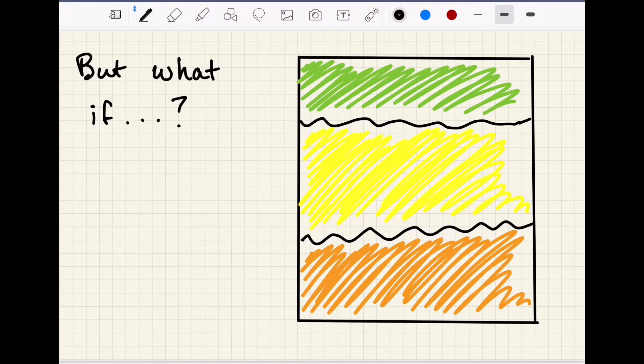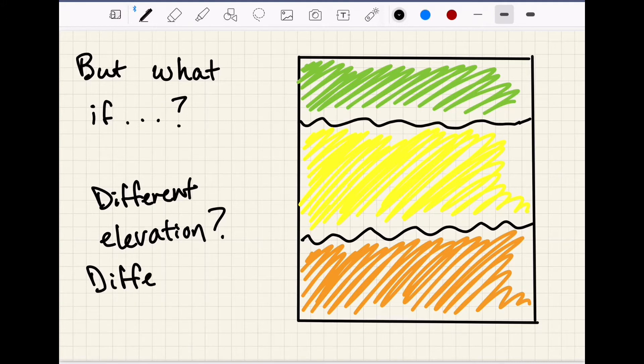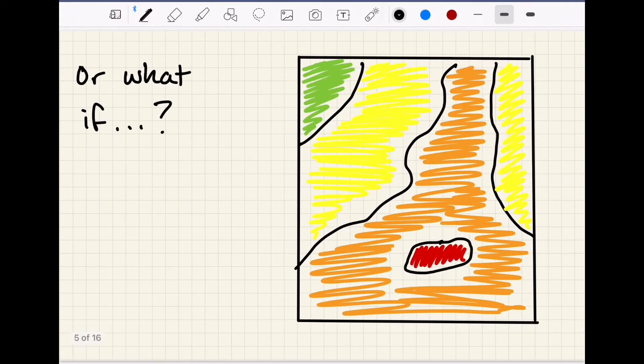But what if your vineyard block looks more like this in terms of changes in elevation or soil type? Or what if it looks like this? Now we're looking at introducing more variation in the block as a whole, so we have to think about how to make our sample reflect that.